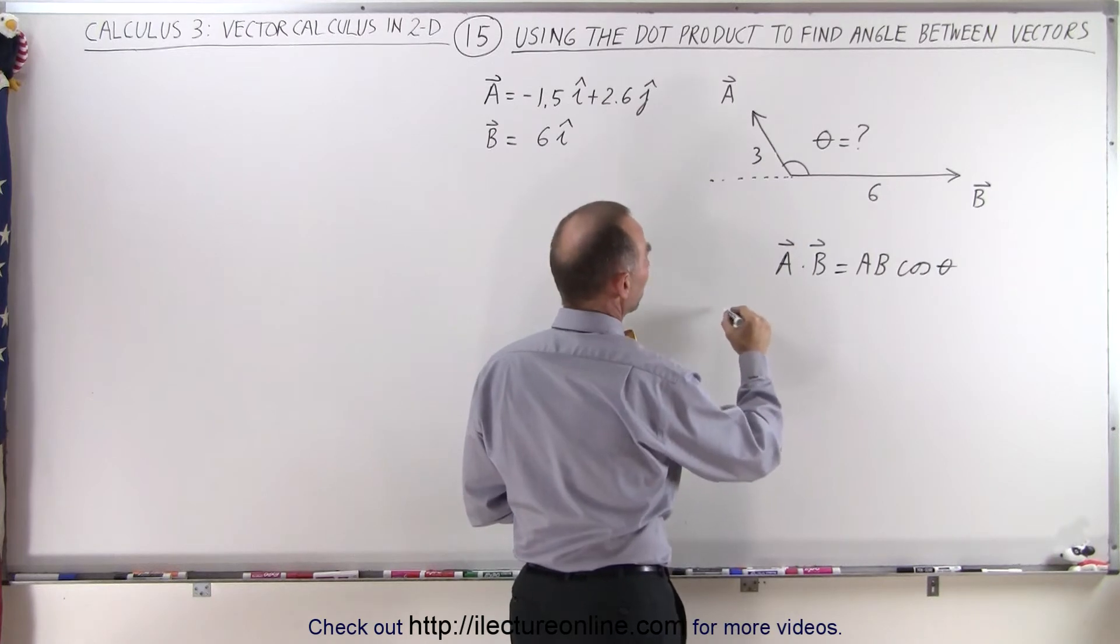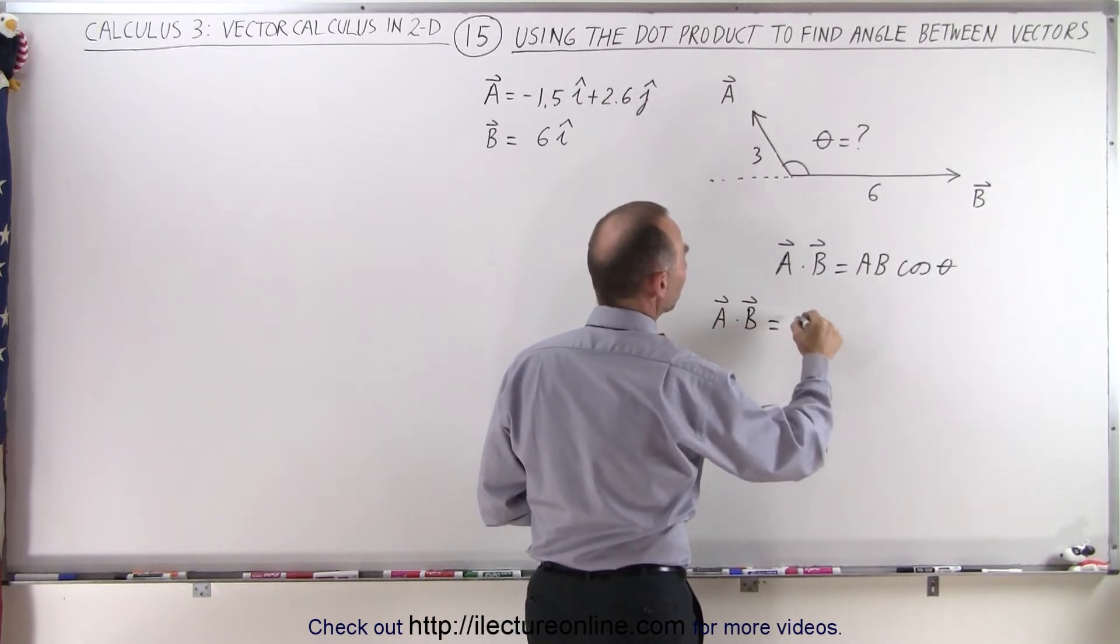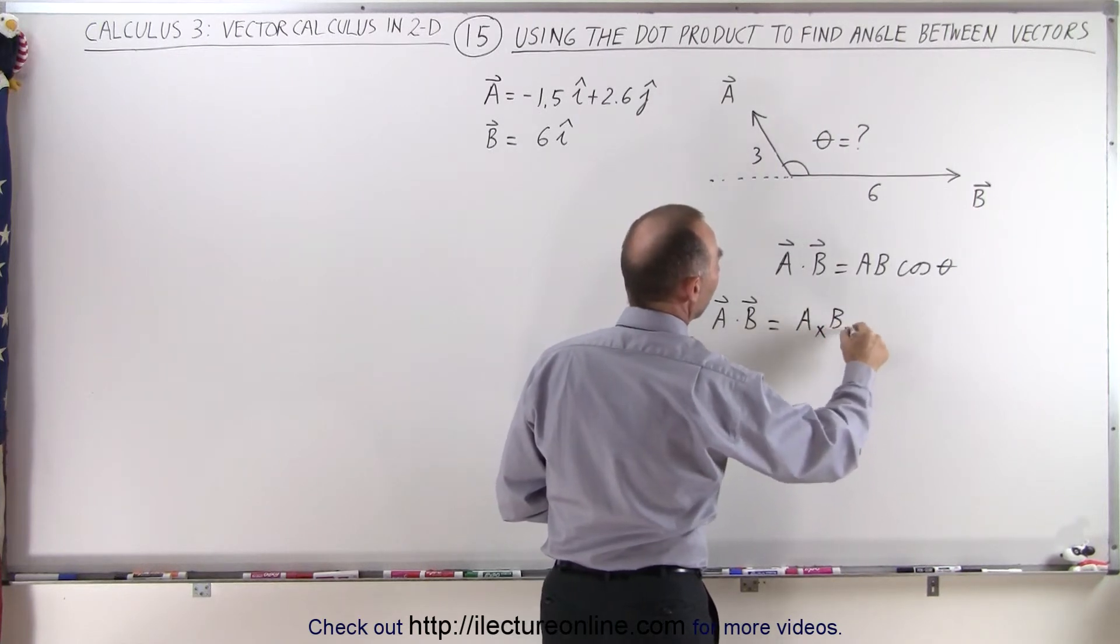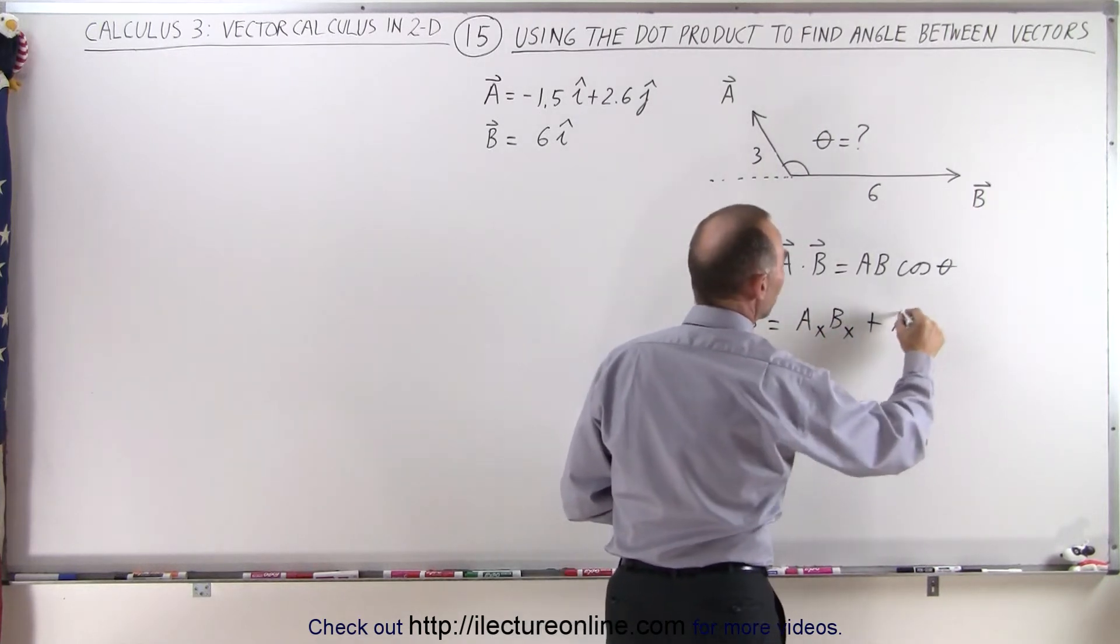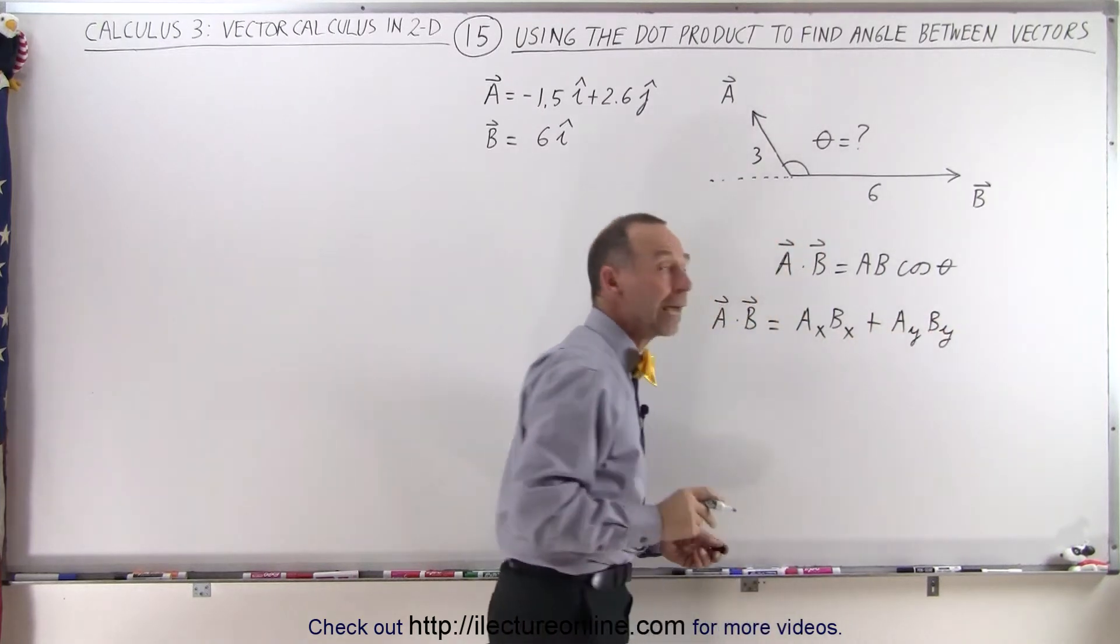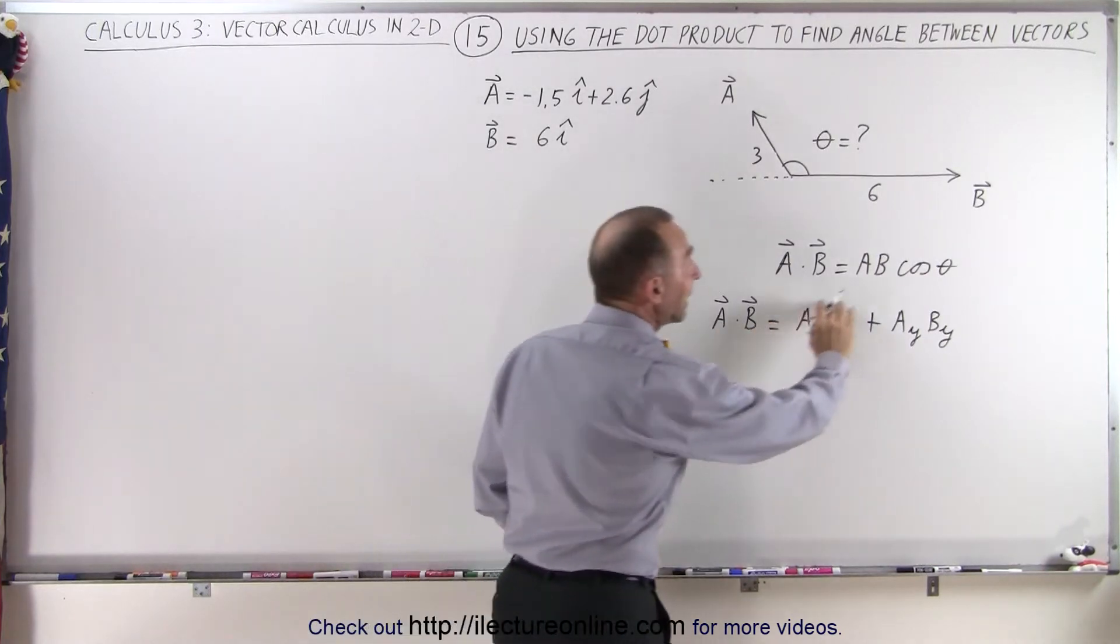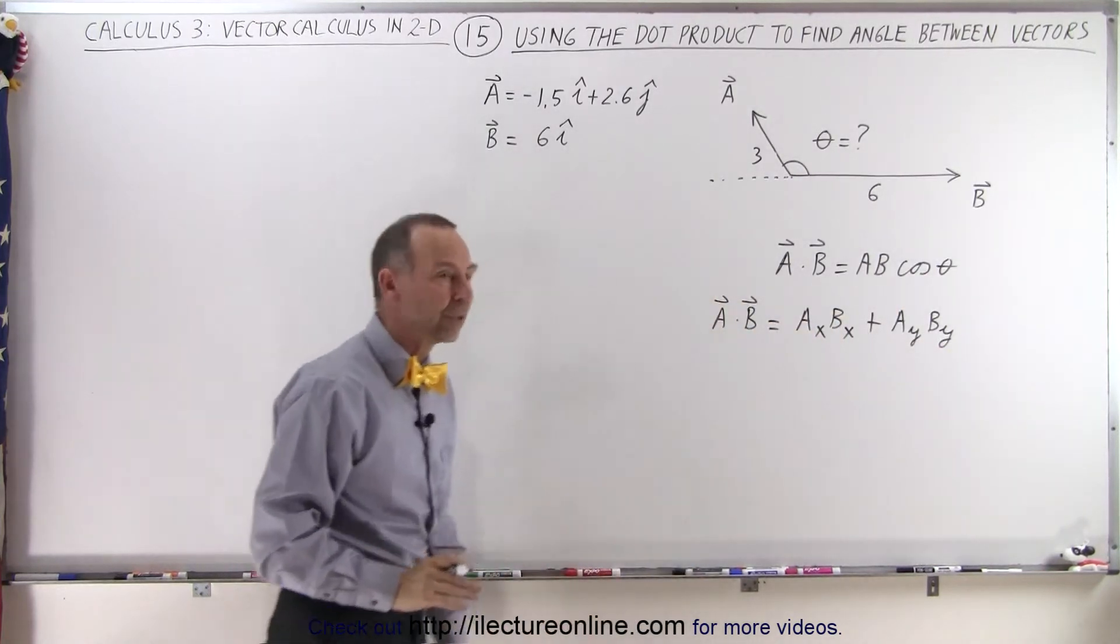And on the previous video, we also saw that A dot B can be found by multiplying the X components together and by multiplying the Y components together. Now again, we have to be careful here when we do that, that if the components point in the negative direction, we add a negative value to that particular equation.